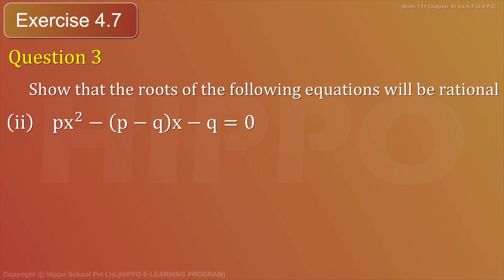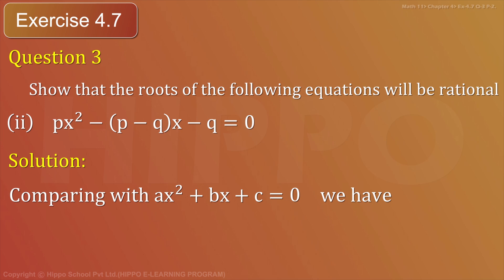Exercise 4.7, Question 3, Part 2: px² - (p - q)x - q = 0. Comparing with ax² + bx + c = 0, we have a = p, b = -(p - q).